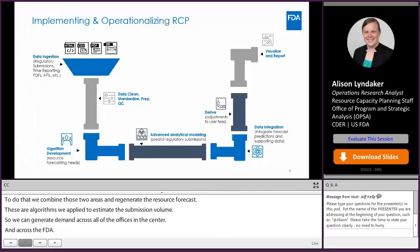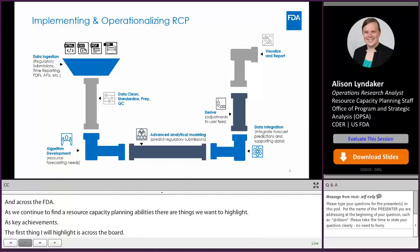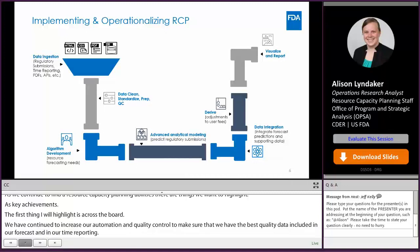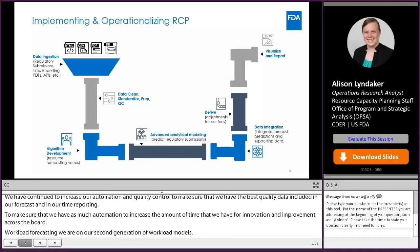When we talk about implementing and operationalizing resource capacity planning, where it all has to start is data ingestion. We have to start with bringing our regulatory submissions, our time reporting — all of that information, whether it be through PDFs, APIs, or Excel spreadsheets — into the system, so that we can start to clean the data, standardize the data, quality control check the data, and really prep the data to be brought into our algorithms.